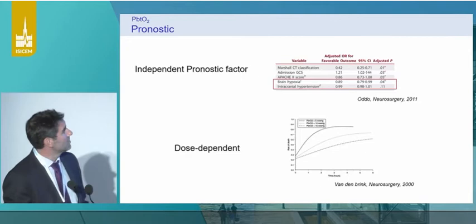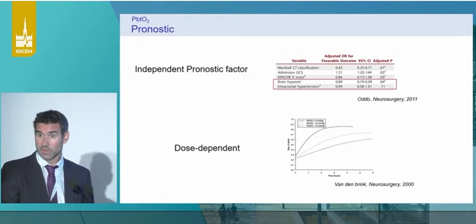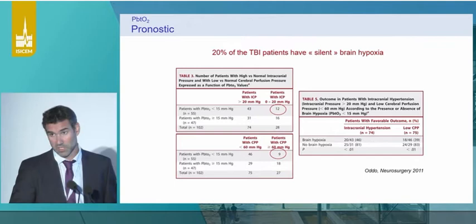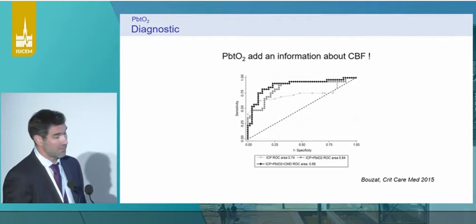What about the prognostic value? PbtO2 is an independent prognostic factor beyond ICP. What is really important is that it is dose-dependent — it's not only the value, but also the time frame for which you have the low PbtO2 value. And most importantly, some patients may have silent hypoxia — meaning that some patients had normal ICP values, but you can see hypoxia on PbtO2 monitoring. From a diagnostic point of view, PbtO2 provides information about CBF, and you can see that when you add PbtO2 to ICP, you have better accuracy to diagnose low CBF at the bedside.